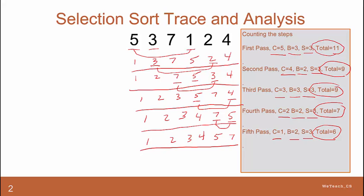Now if we add all these up, we have 11 and 9, that's 20, and 9, that's 29, plus 7 is 36, plus 6 is 42. So the total number of steps is 42.